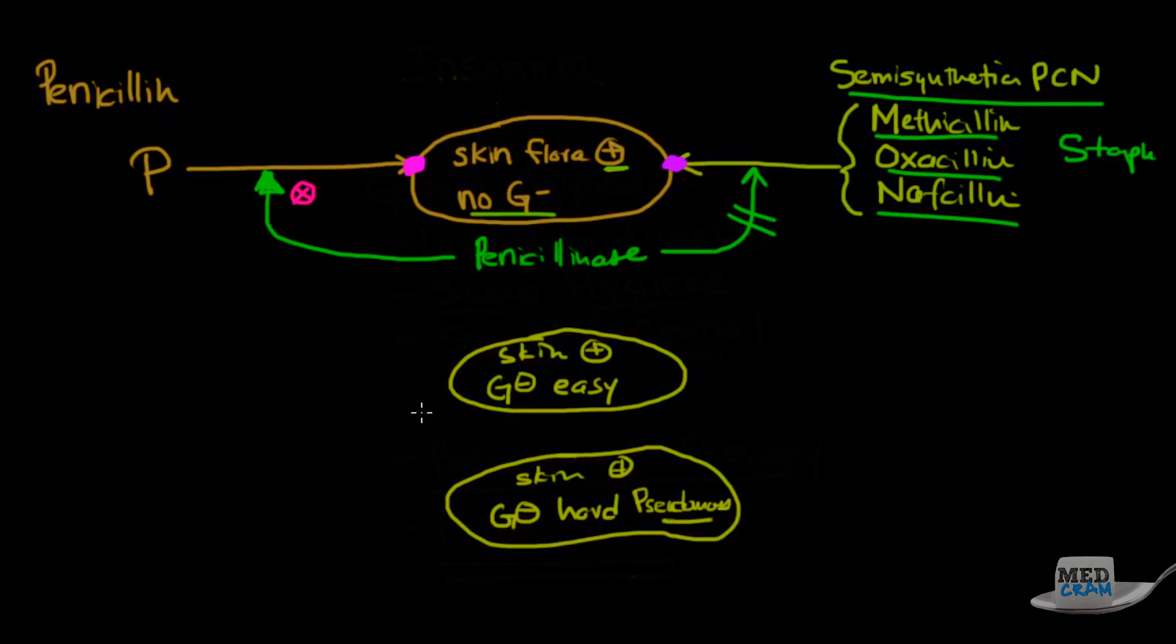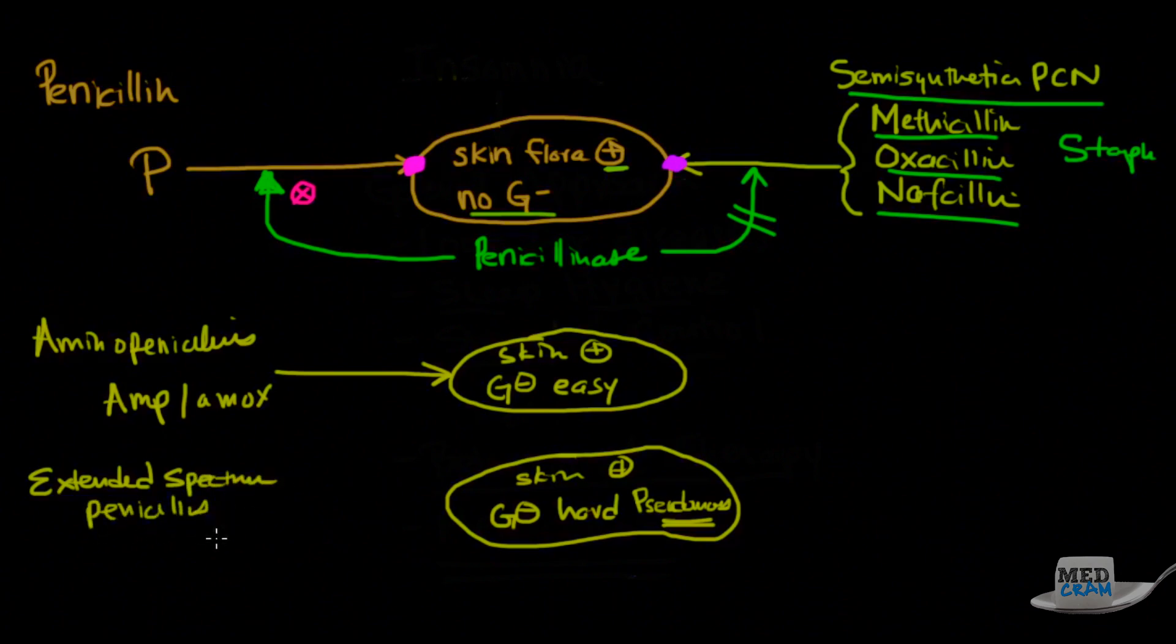And so at first they came up with antibiotics to cover these gram positives and some of these easier gram negatives. And those are known as the aminopenicillins, things like ampicillin or the oral form amoxicillin. The ones that they came up with for these really difficult ones, like the pseudomonas, were called extended spectrum penicillins, like pipercillin and ticarcillin.